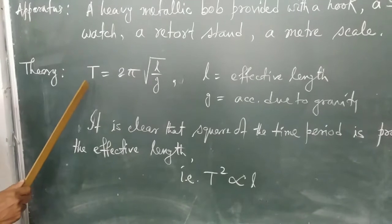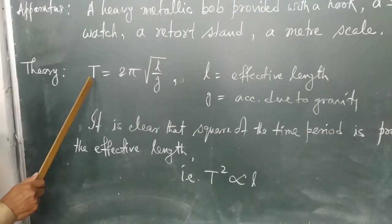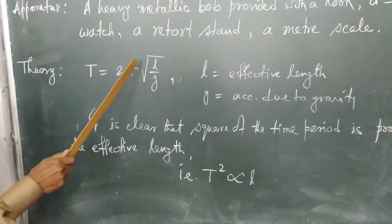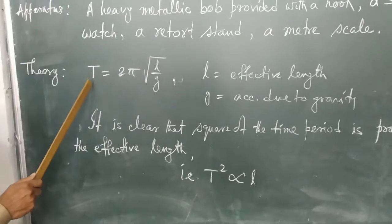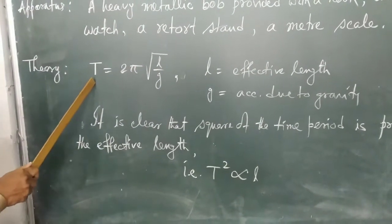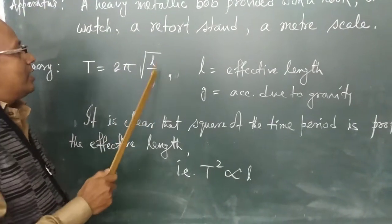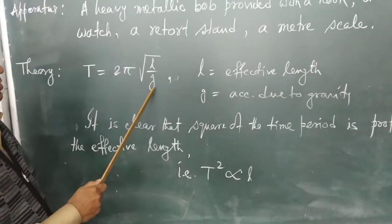Here in theory we will see T equals 2π√(L/g). T means time period. So time period equals 2π√(L/g) where L is the effective length and g